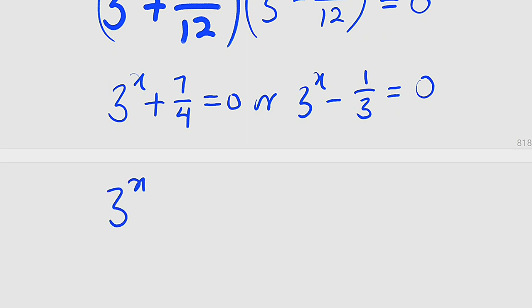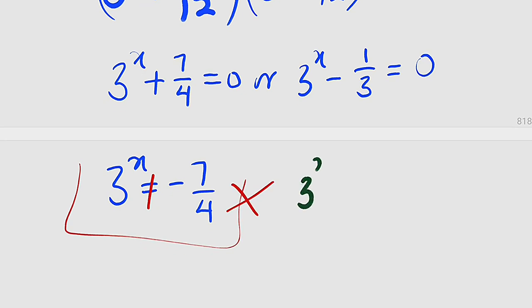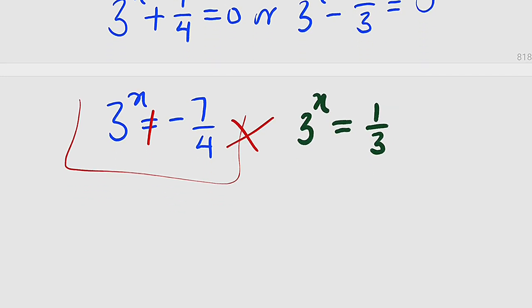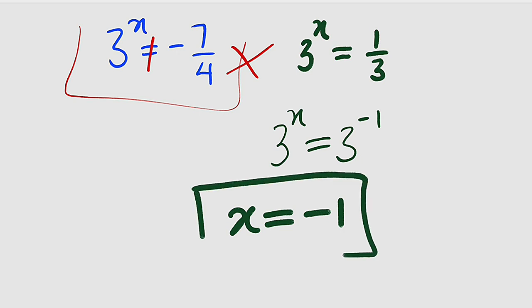From the first factor, 3 to the power of x equals negative 7 divided by 4, which is not possible because 3 to the power of x is always positive, so we do not consider this solution. From the second factor, 3 to the power of x equals positive 1 divided by 3, and 1 divided by 3 is the same as 3 to the negative 1. Since the bases are the same, the exponents must be equal, and finally x equals negative 1. This is our final answer.